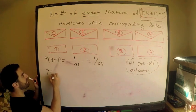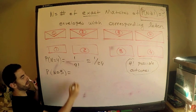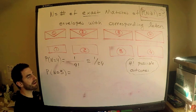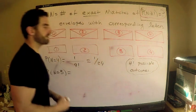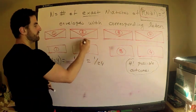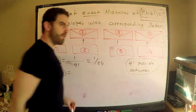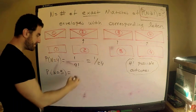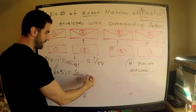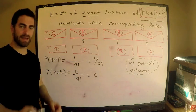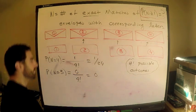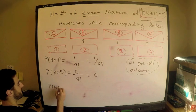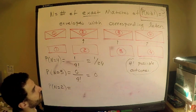Now P(N=3), which is even easier. Can I get exactly three exact matches? If two goes to two, three goes to three, and four goes to four, then where does one go? It has to go to one — so you automatically get four matches. You cannot have exactly three matches. Therefore P(N=3) = 0/24 = 0.